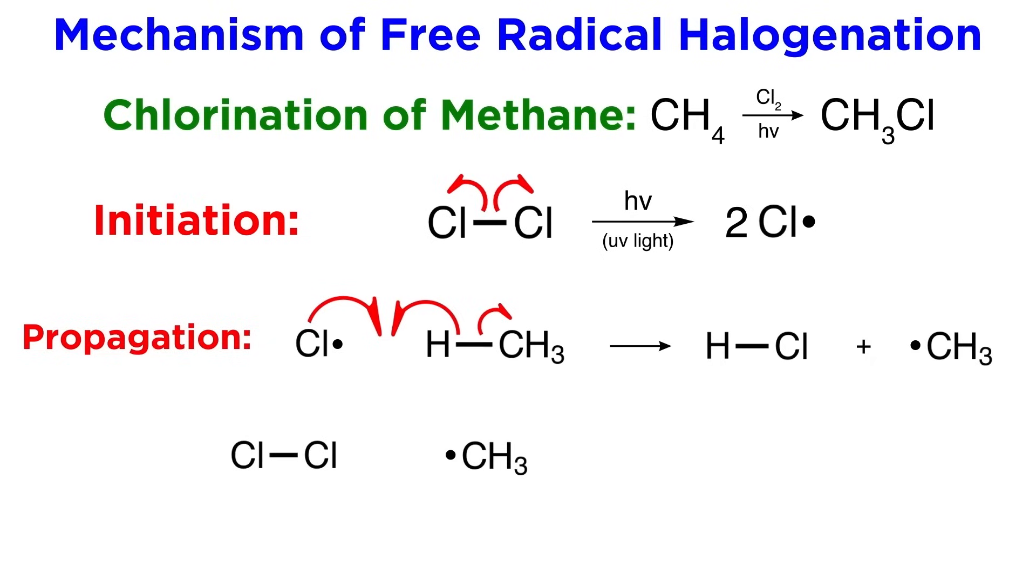Then if this methyl radical encounters another chlorine molecule, which will be much more abundant in solution than the chlorine radical, we can get another propagation step, whereby one of the electrons in this bond will combine with this lone electron to give a carbon-chlorine bond, and the other electron will remain with the other chlorine to give another chlorine radical. And there we have chloromethane.